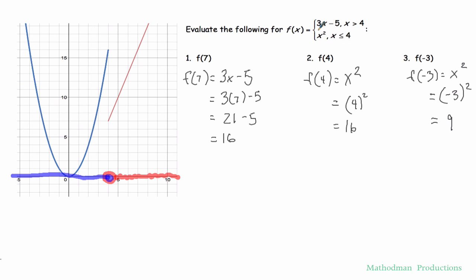That's pretty much it. Pretty easy, right? How can I check if my answers are right? Well, let's just look at the graph right here. f of 7. When x equals 7, then it's saying that my function should equal 16. So I look at 7 all the way up to 16. Yep, that matches f of 4.